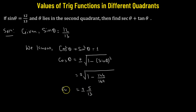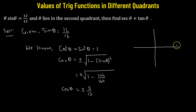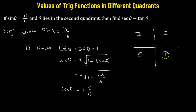We are getting two values of cosine theta: positive 5 over 13 and negative 5 over 13. We only have to consider one value, and for that we'll need to understand the quadrant system. We'll consider our Cartesian coordinate system, dividing the plane into four equal parts, giving us the first, second, third, and fourth quadrant.